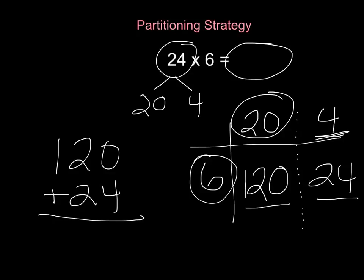0 plus 4 is 4, 2 plus 2 is 4, and 1 plus nothing is 1. Therefore, 24 times 6 is 144.